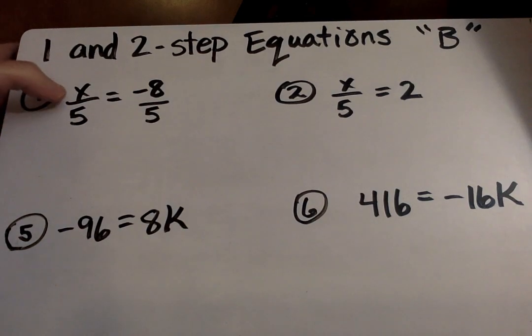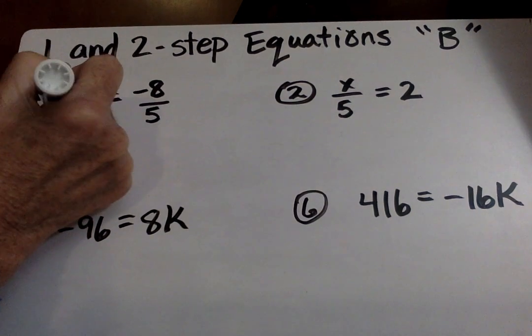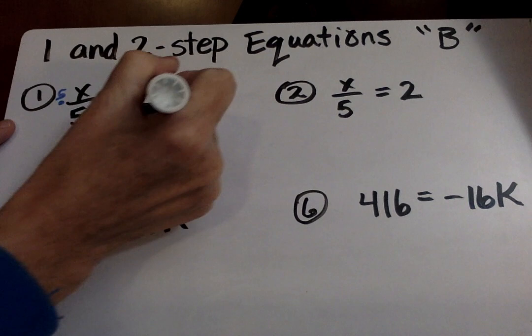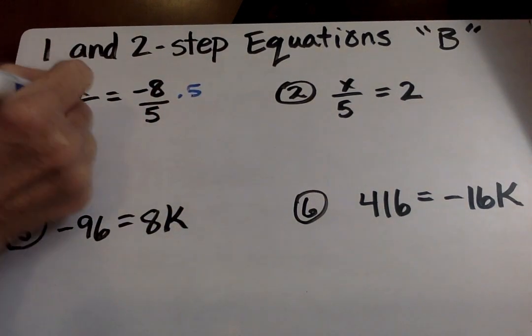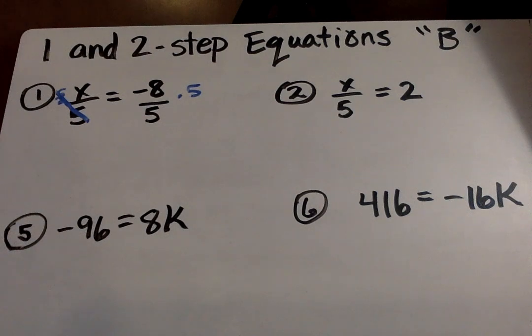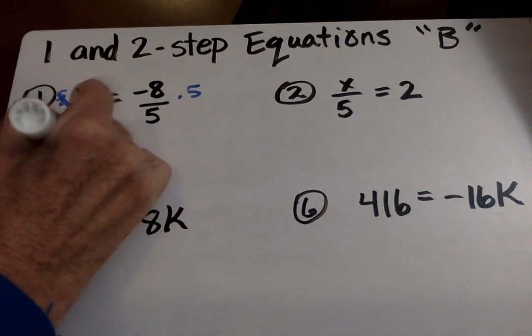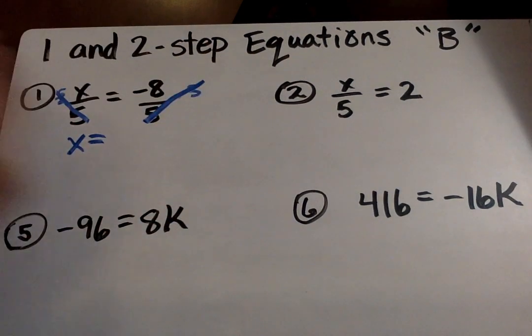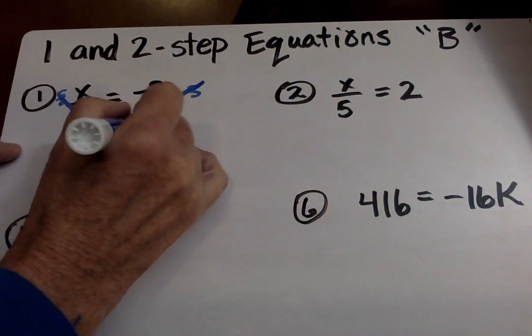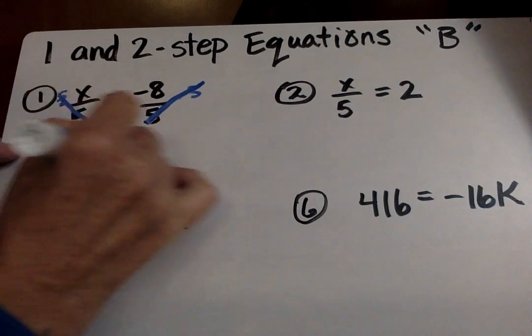So in order to get X by itself, we need to get rid of this. It's X divided by five. So we do the inverse operation. So instead of divide, we're going to multiply. So if I multiply by five, and I do that on both sides of the equation, and I cancel this out, and I'm left just with the X. So X equals, that cancels out with that, five. X equals negative eight.